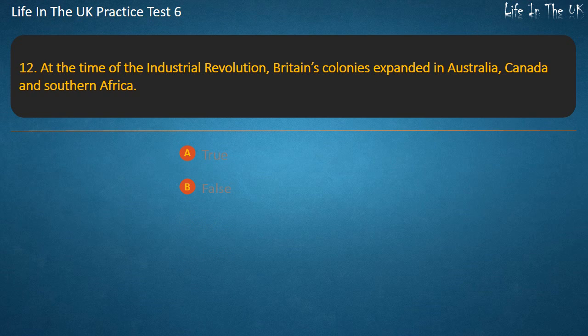Question 12. At the time of the Industrial Revolution, Britain's colonies expanded in Australia, Canada and Southern Africa. True or false? Answer: True.